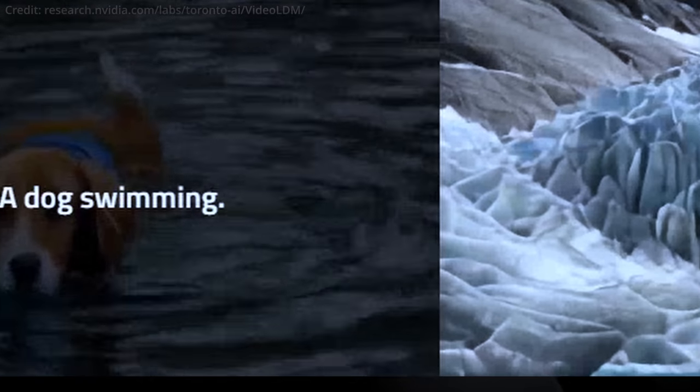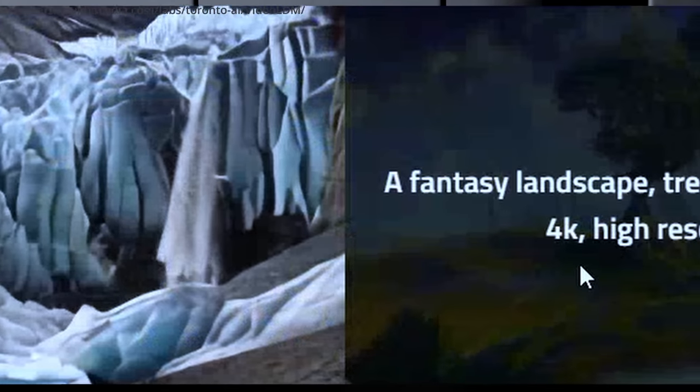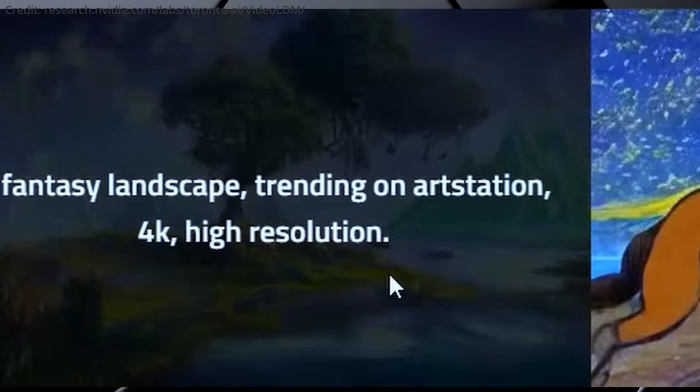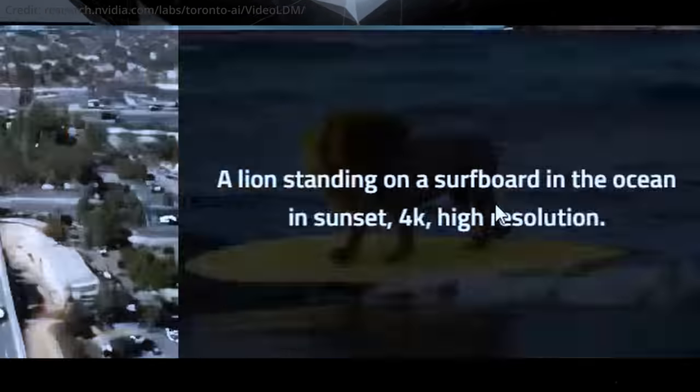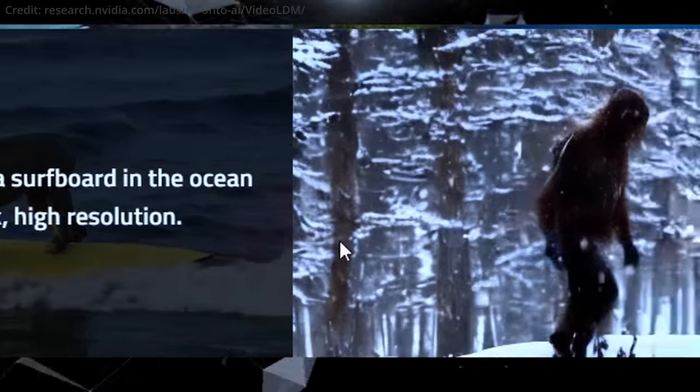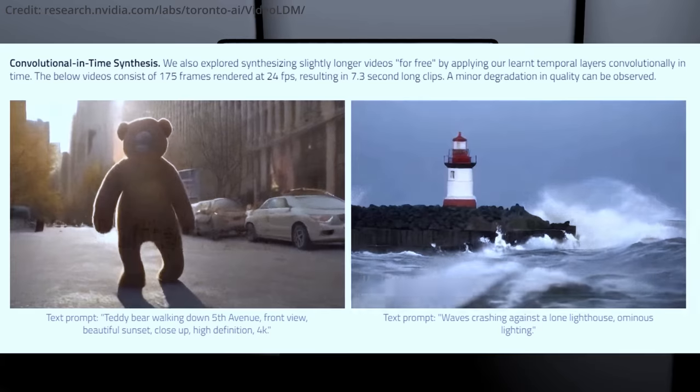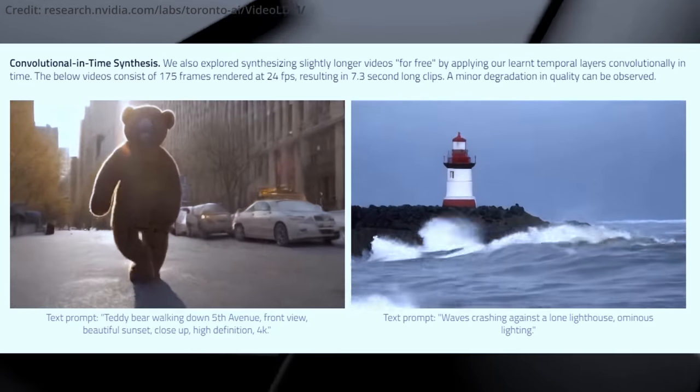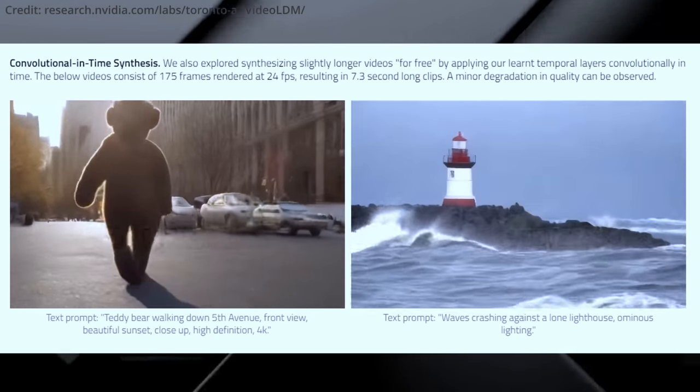By integrating temporal layers into the image-latent diffusion model fine-tuned with Dreambooth, the model can output extremely specific content, even when using nuanced text prompting, offering what is arguably the most impressive text-to-video generation to date. The model also has the potential to generate slightly longer videos by applying the learned temporal layers convolutionally in time, although with a slight reduction in quality.